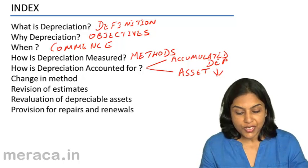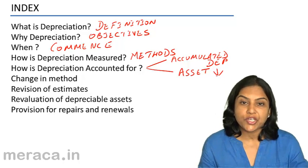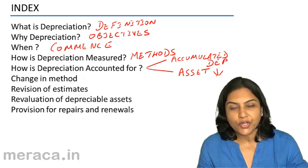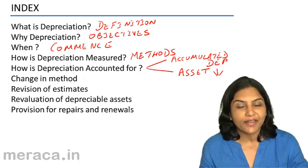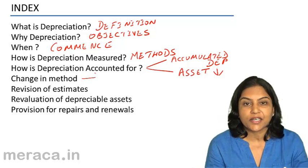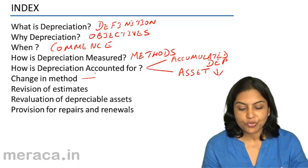Next, we will go on to see, once we have adopted a method, can we change to another method? When can we change, why do we change and what are the disclosures we need to do? What are the accounting entries we need to pass in case there is a change from one method to the other?